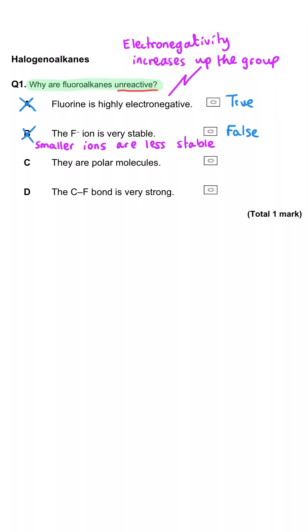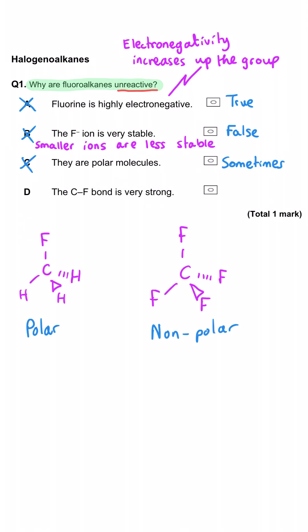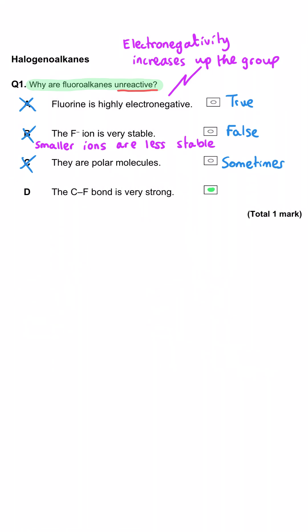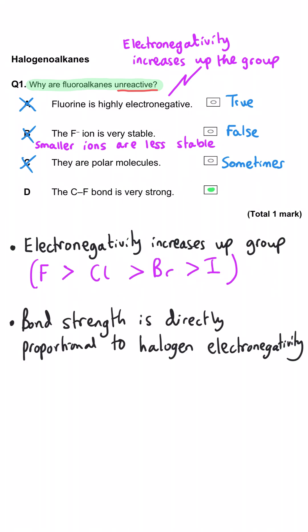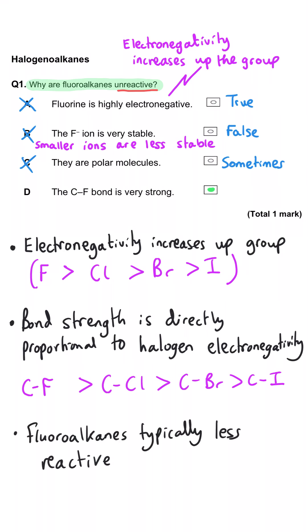Option C: they are polar molecules. Not necessarily — you can have symmetrical fluoroalkanes with no dipole moment. So the correct answer is D: the C–F bond is very strong, because fluorine is highly electronegative. Electronegativity decreases down the group, so bond strength also decreases, and halogenoalkanes get more reactive down the group.